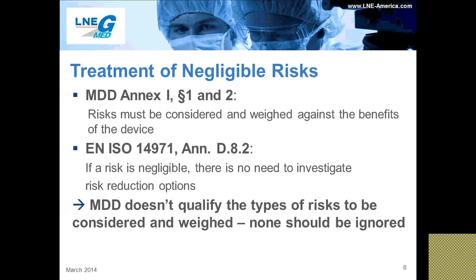The first item included in the Informative Annexes is a clarification on how to treat negligible risks. Annex D.8.2 of ISO 14971 states that, below a certain level, the residual risk will be regarded as so insignificant that it is comparable with the everyday risks we all experience and tolerate. Such risks can be called negligible. The standard goes on to state that, if a risk is already negligible, there is no need to investigate any risk reduction option. In other words, if a risk is called negligible, there is no need to further consider it.